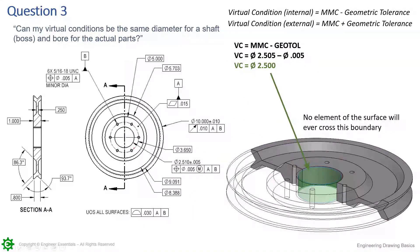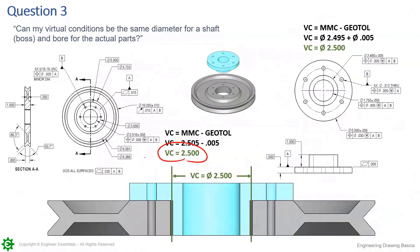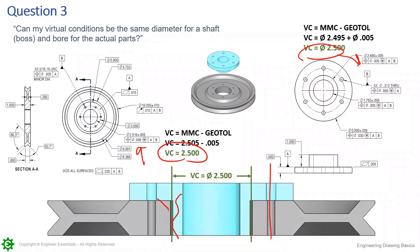Taking both features into consideration: virtual condition for the ID = 2.500, virtual condition for the OD = 2.500. Because the datums line up — we used mating datums — we can now say that if the datums are set up appropriately, the virtual condition of the blue part and the virtual condition of the gray part line up perfectly. This feature will never cross that boundary, and that feature will never cross this boundary. Regardless of orientation, form, or location, as long as they pass their position checks, you will always have at worst a zero clearance condition.